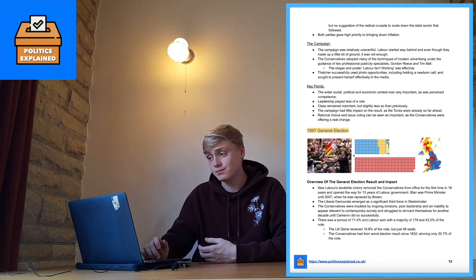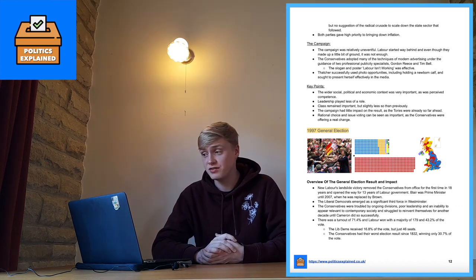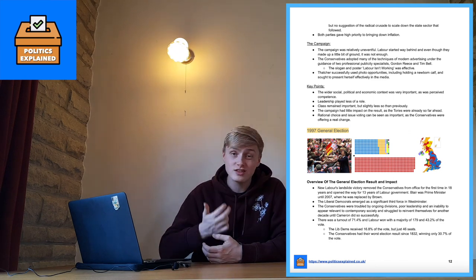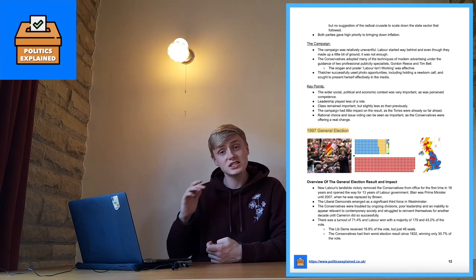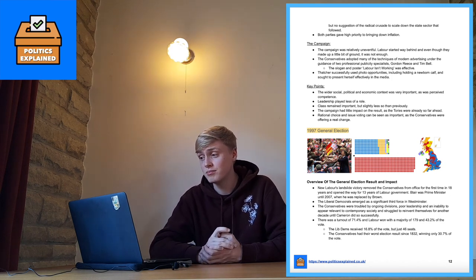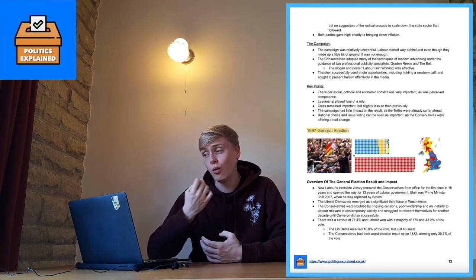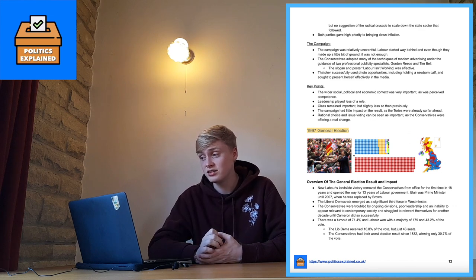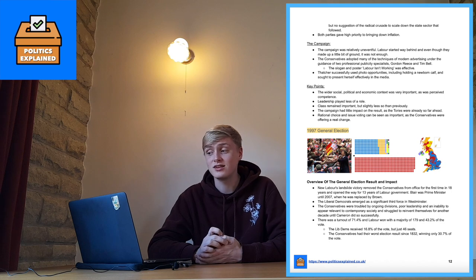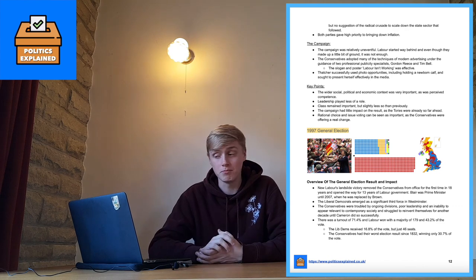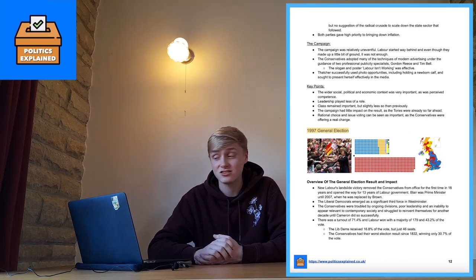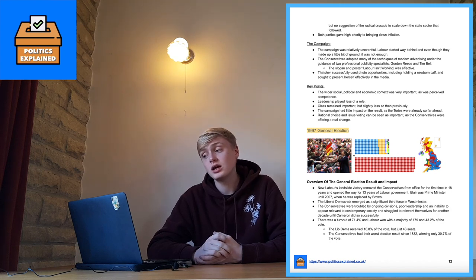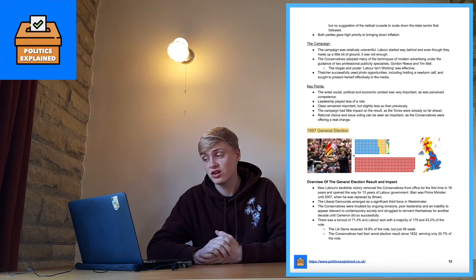Moving on to the 1997 general election. New Labour won a landslide victory, removing the Conservatives from office for the first time in 18 years, opening the way for 13 years of Labour government — Blair as PM until 2007, then Brown for three more years. The Lib Dems emerged as a significant third force, whilst the Conservatives were troubled by ongoing divisions, poor leadership and an inability to appeal to contemporary society. There was a turnout of 71.4%; Labour won with a majority of 179 and 43.2% of the vote, whilst the Conservatives had their worst results since 1832 with just 30.7% of the vote.